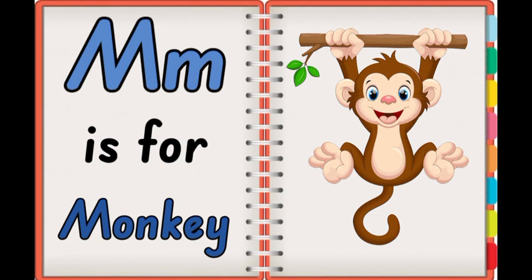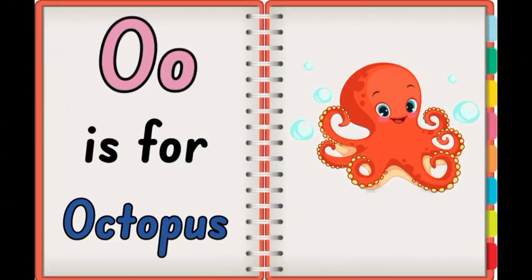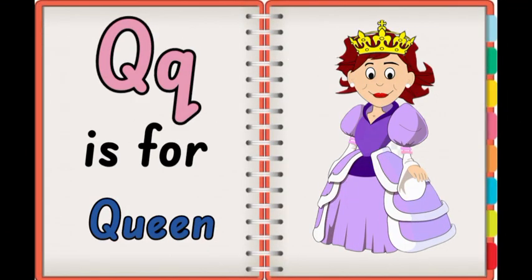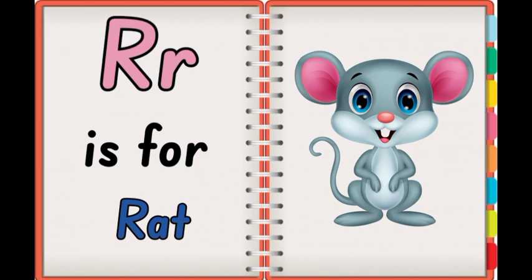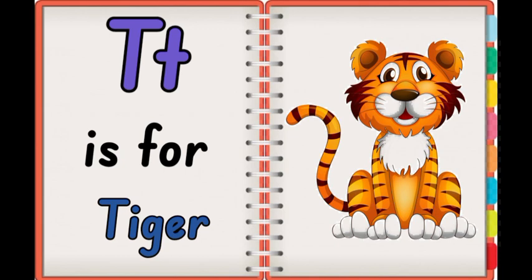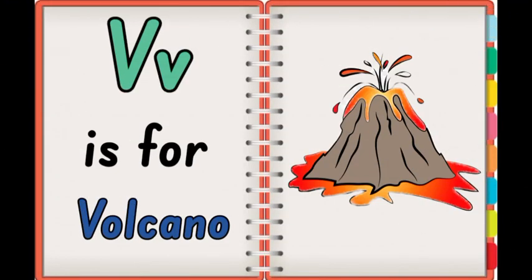M is for Monkey. N is for Nest. O is for Octopus. P is for Penguin. Q is for Queen. R is for Rat. S is for Snail. T is for Tiger. U is for Umbrella. V is for Volcano.